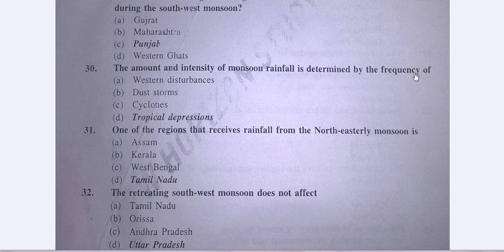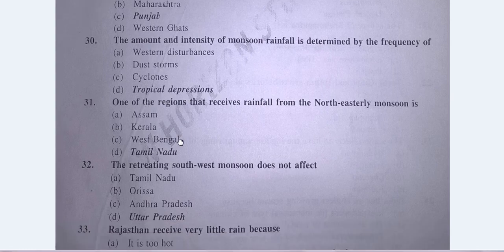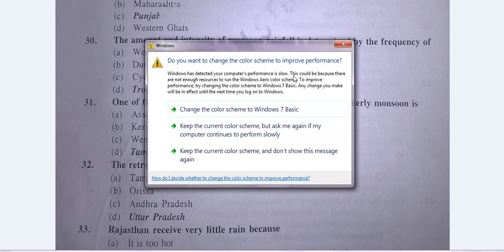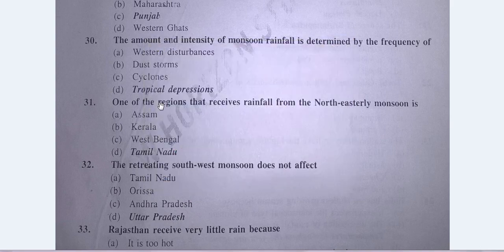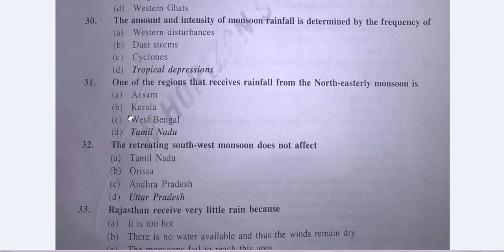Question No. 30: The amount and intensity of monsoon rainfall is determined by the frequency of tropical depressions.